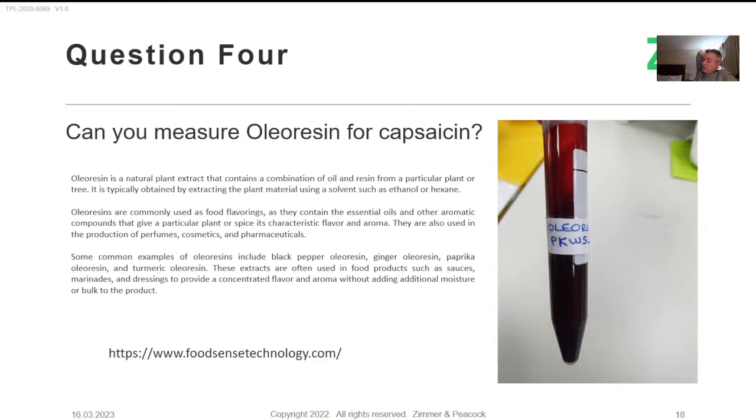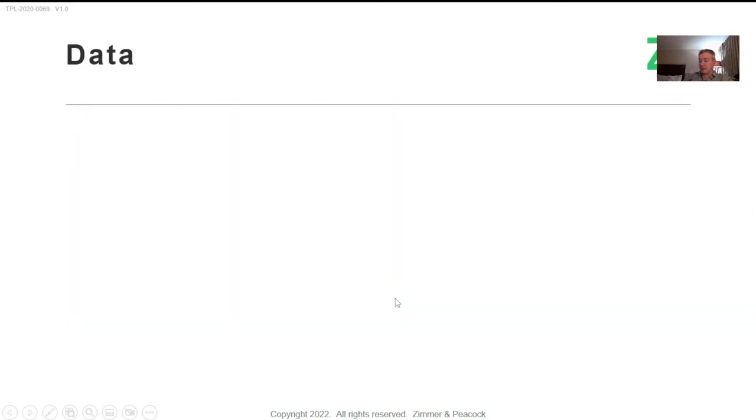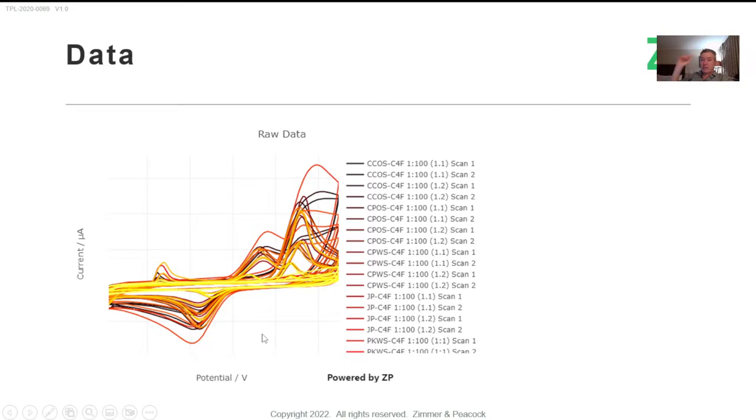Question number four is about oleo resins. Oleo resins - this is the general term from the food industry. You want to extract something from a plant substance, it could be ginger or chilies. You use an organic solvent to do the extraction, then you remove the organic solvent and you're left with this tarry material which should contain a lot of the active ingredient. In the case of chilies, it would be capsaicin. The question was, could we use our FoodSense technology to measure these capsaicins? All these samples came in, we analyzed them on the FoodSense, and we could clearly see the capsaicin activity. Yeah, it worked, really no issues.